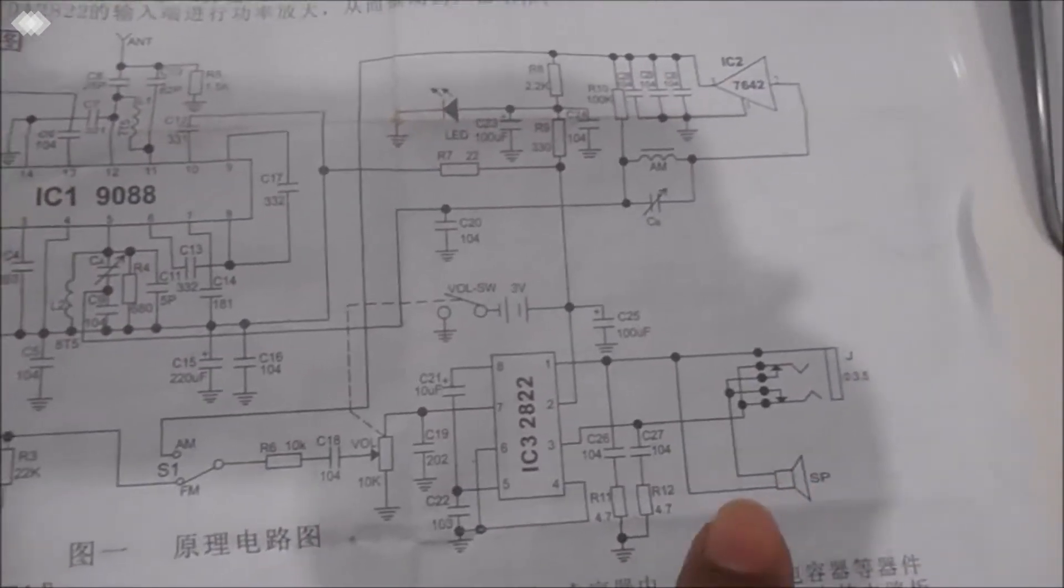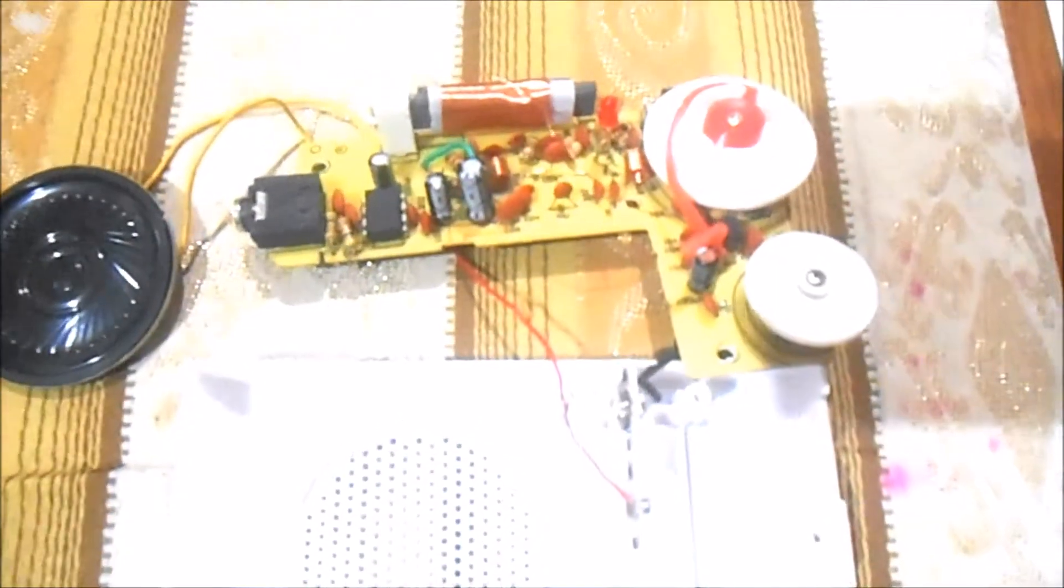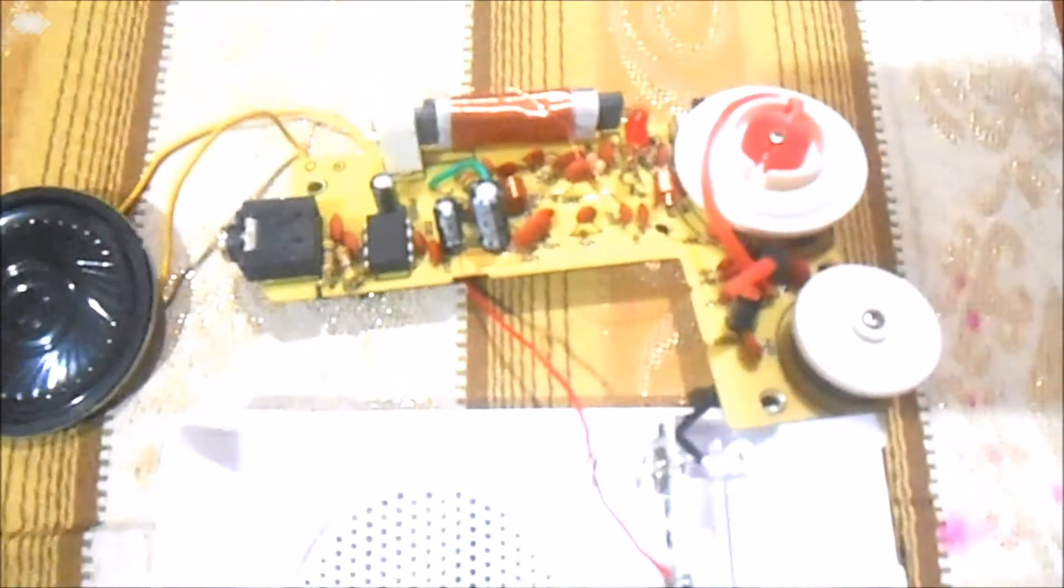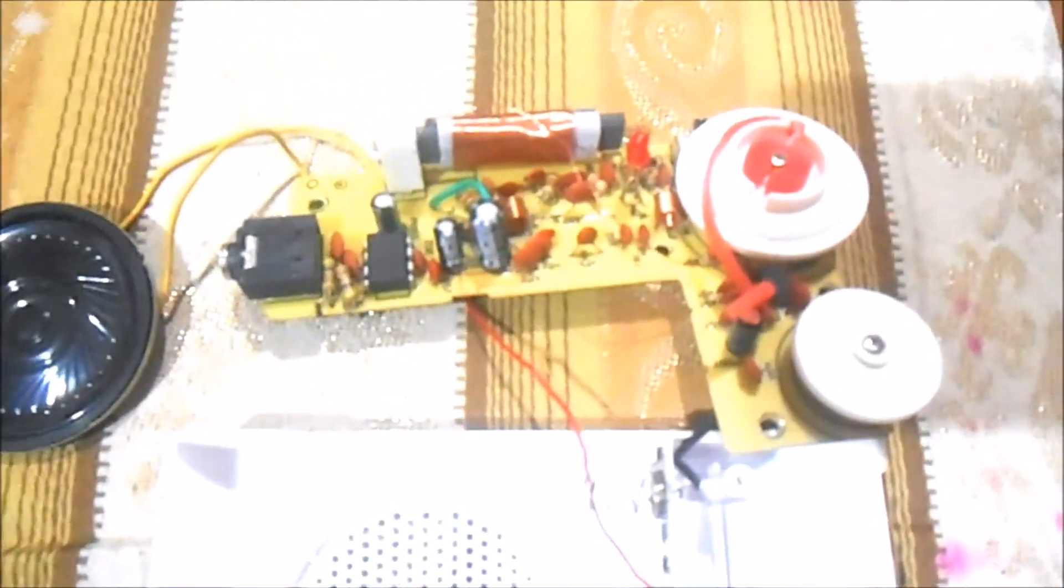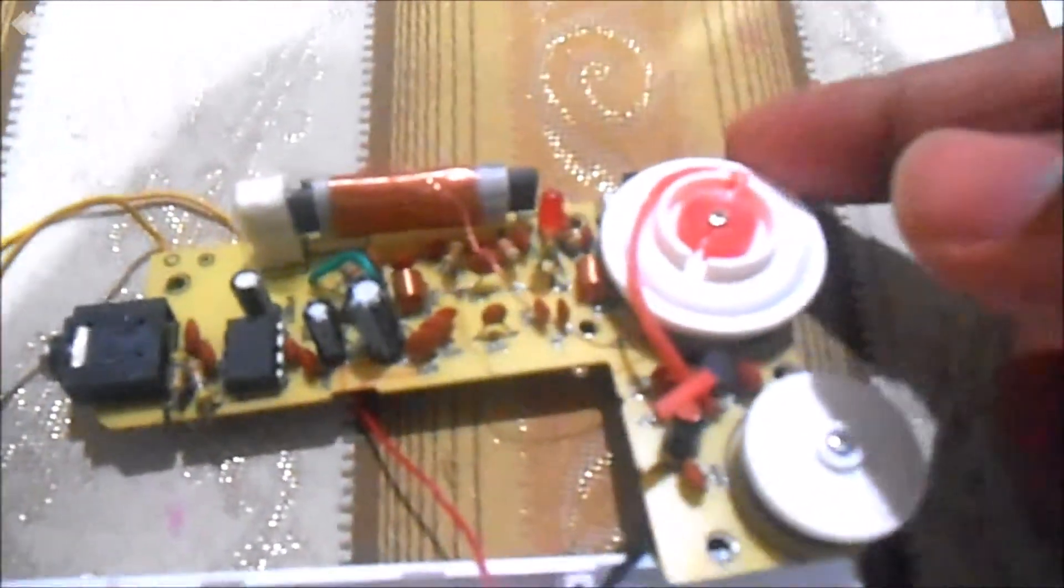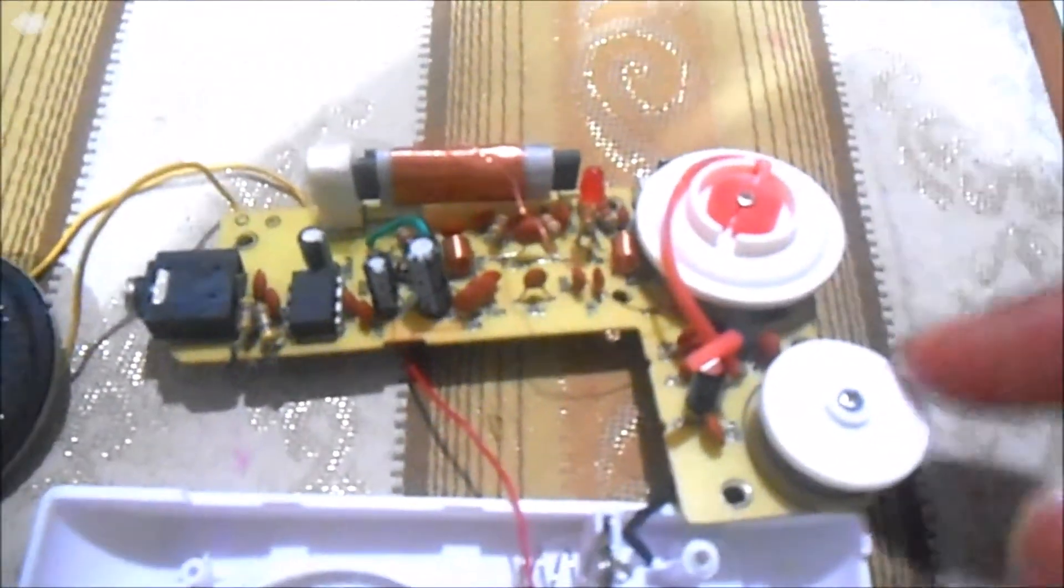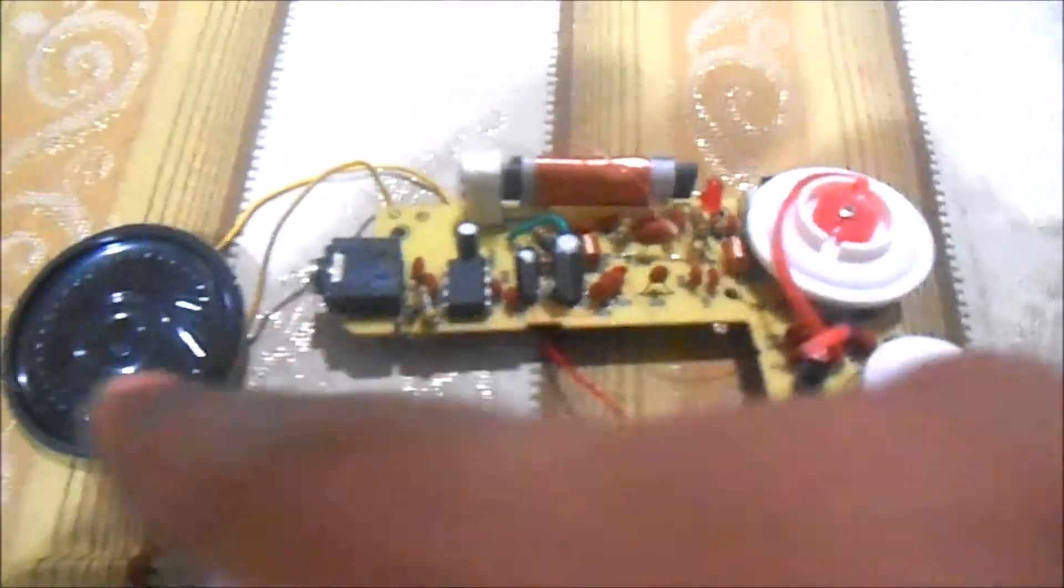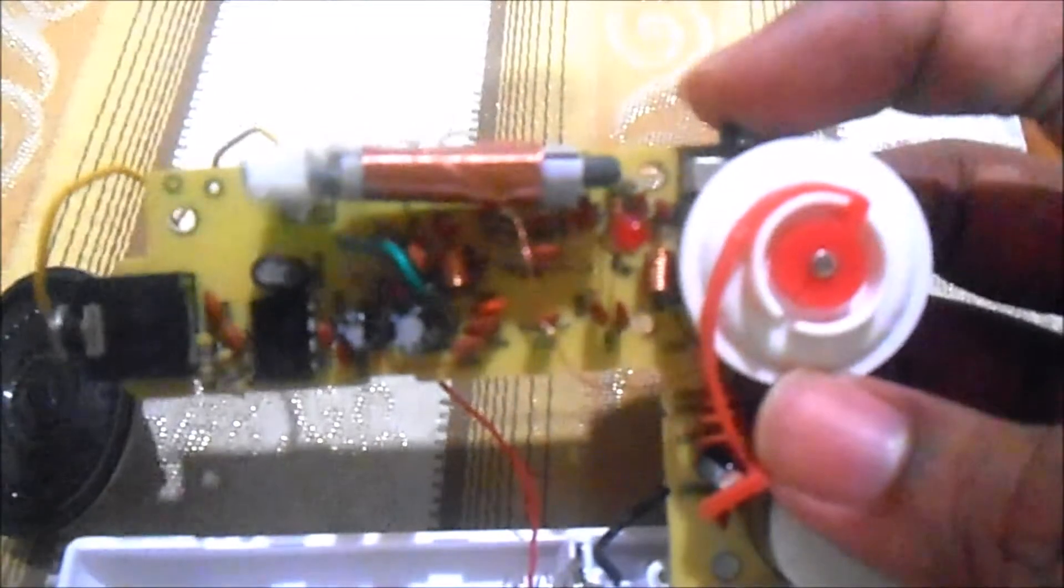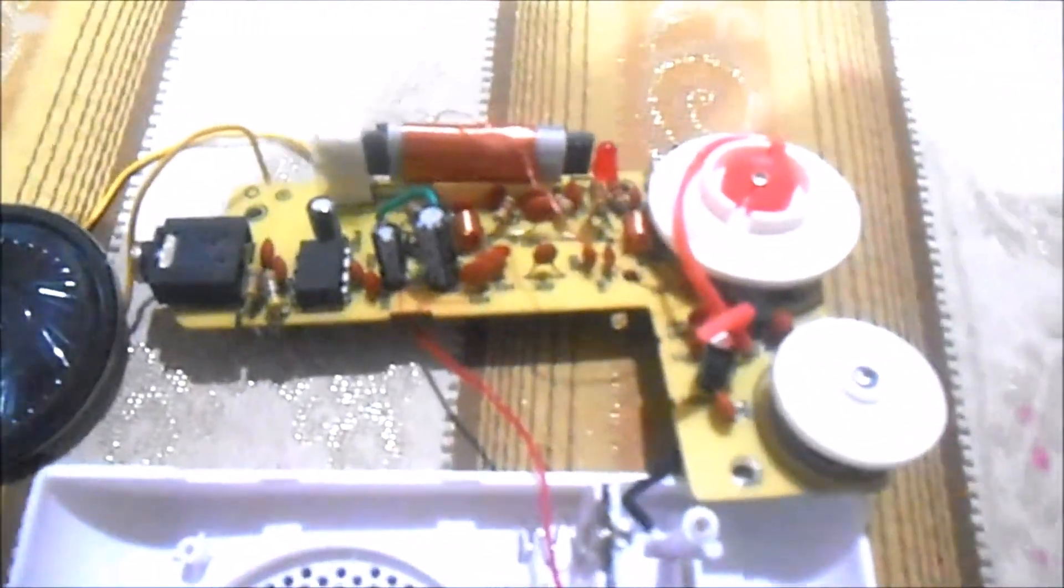This is the result after soldering. Here you can see the FM/AM tuner, the volume control, and the speaker. You can change between FM and AM, and there are many capacitors and transistors.